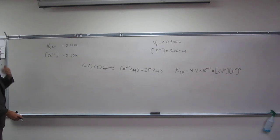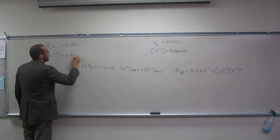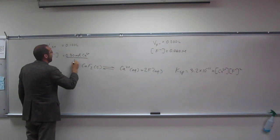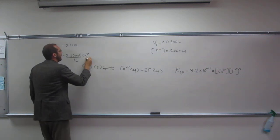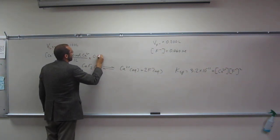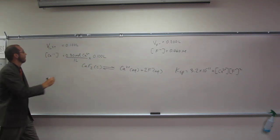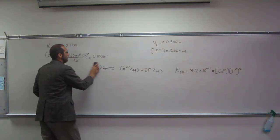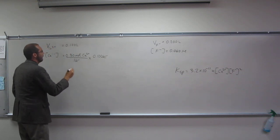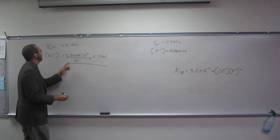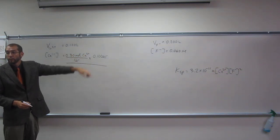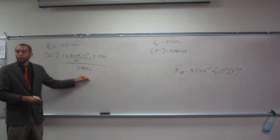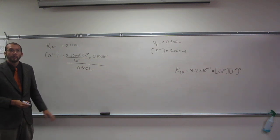This is going to be moles of Ca2+ per liter, but we have 0.100 liters of this stuff. Is everybody okay with that? Cancel, cancel, cancel. I'm going to erase this up here for right now and divide the whole thing by the total volume, which is 0.1 plus 0.2. So 0.300 liters is the total volume. This would be the new molarity. Is everybody okay with that?